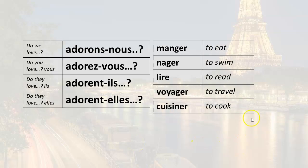So now all we have to do is ask the questions. Do we love to eat? Adorons-nous manger? Do we love to swim? Adorons-nous nager? Do we love to read? Adorons-nous lire? Do we love to travel? Adorons-nous voyager? Do we love to cook? Adorons-nous cuisiner?